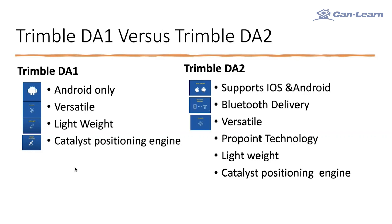Still versatile. Now it has the ProPoint technology, which is the best GNSS positioning engine that Tramble have in the market today. It is the same technology that the R12 is using. It improves the receiver performance in challenging GNSS environments, like operating under a tree canopy or under a high-rise building. Still lightweight — a little bit heavier than the DE1, but not by much.